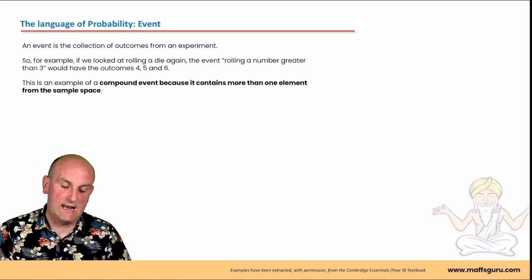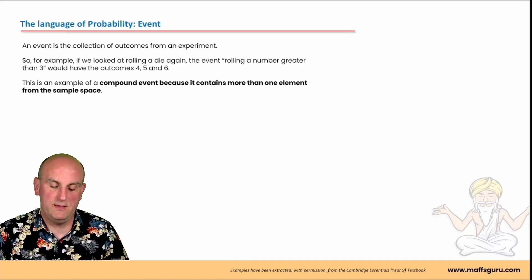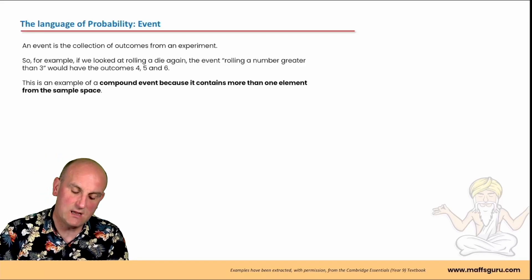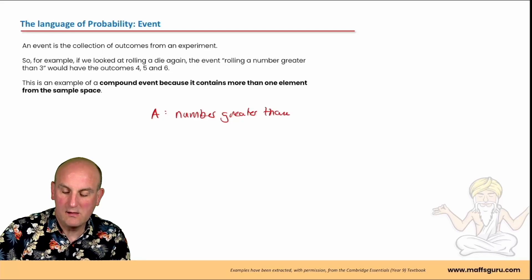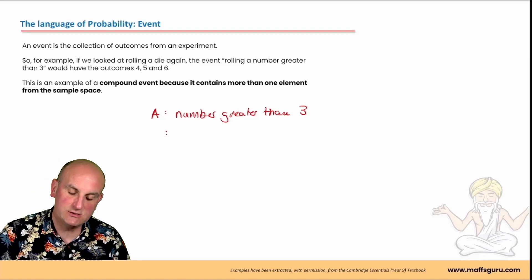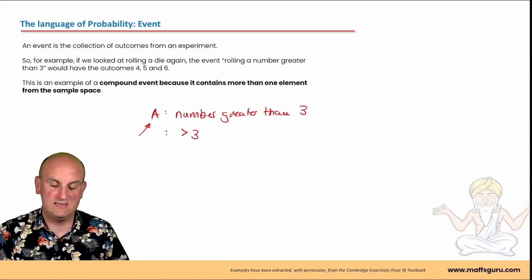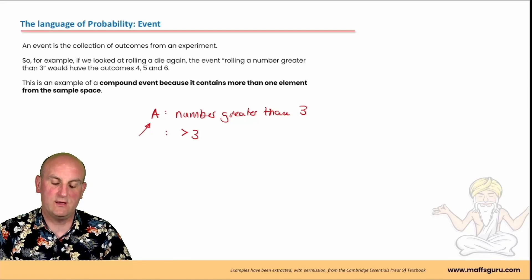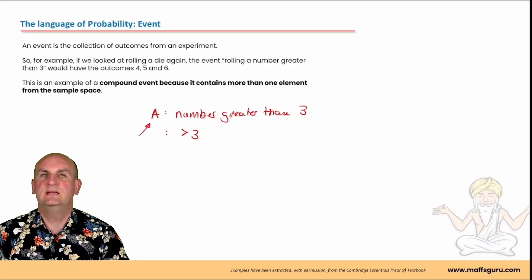Looking at the event: an event is a collection of outcomes from an experiment. For example, if I'm looking at rolling a die, an event might be rolling a number greater than 3. So I might say A is a number greater than 3. The event rolling a number greater than 3 would have the outcomes 4, 5, and 6. This is an example of a compound event because it contains more than one element in the sample space.